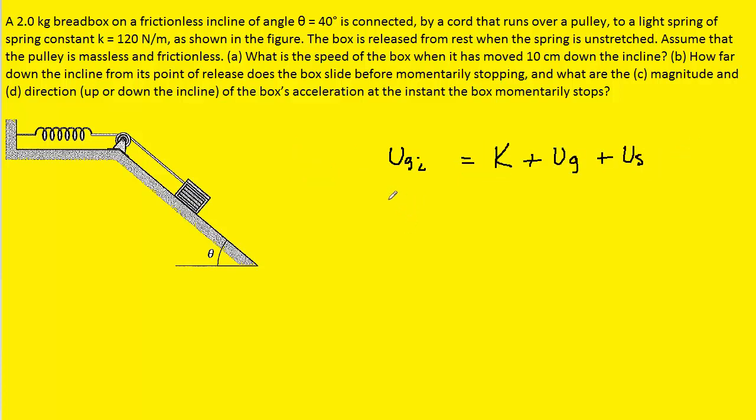We can expand each of these terms using their respective expressions. Gravitational potential energy would be mass times g times the initial height. The final kinetic energy would be one-half times the mass times the final speed squared. We have the final gravitational potential energy, which will be mgy, and then the final spring potential energy, which is one-half times k times the distance by which the spring is stretched squared.